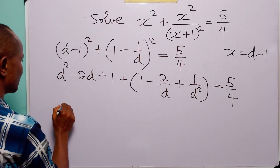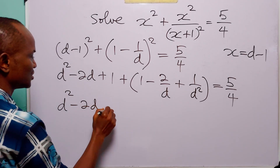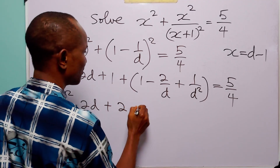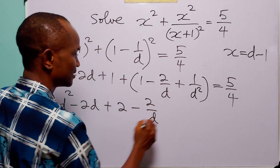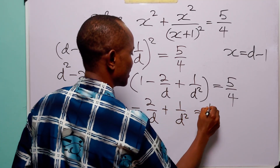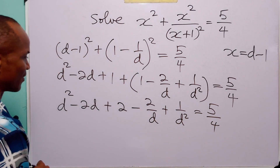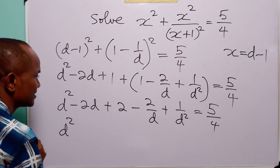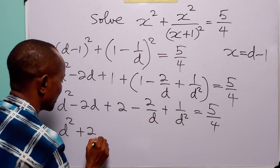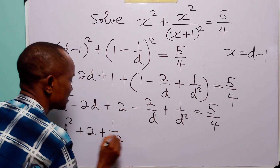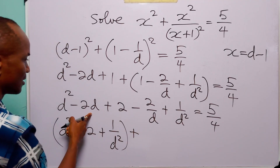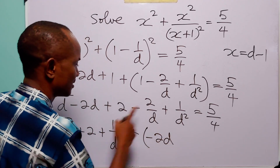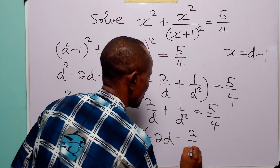Tidying up the left-hand side we have d squared minus 2d plus 1 plus 1, which equals 2, minus 2 over d plus 1 over d squared. Rearranging, we have d squared plus 2 plus 1 over d squared, plus minus 2d and minus 2 over d. Everything is equal to 5 over 4.